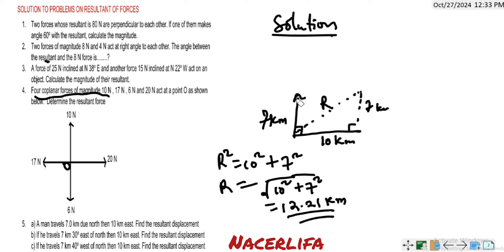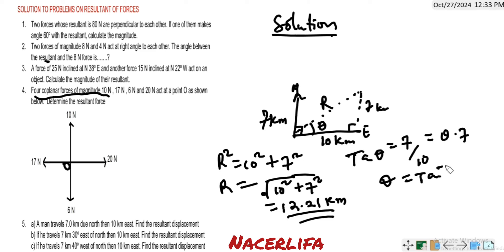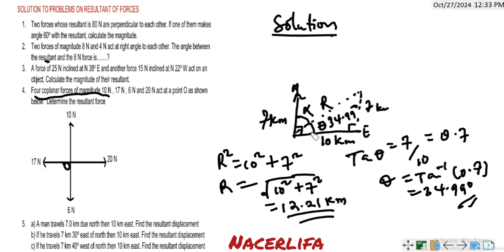To find the direction, using SOH-CAH-TOA: tan θ = opposite over adjacent = 10 over 7 ≈ 0.7 (note: opposite is 10, adjacent is 7 relative to north). Wait — tan θ = 7 over 10? Actually tan θ = 10/7 ≈ 1.43, but the transcript gives 0.7, meaning tan θ = 7/10. Tan inverse of 0.7 gives approximately 34.99 degrees.